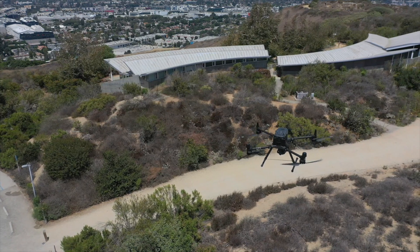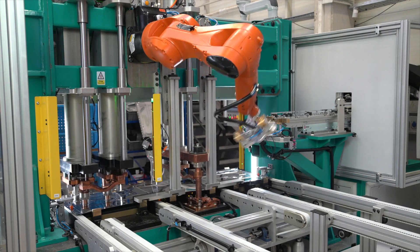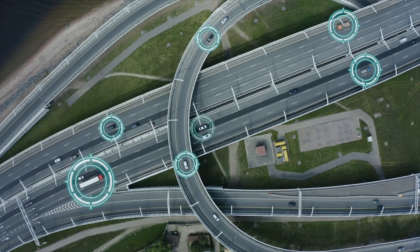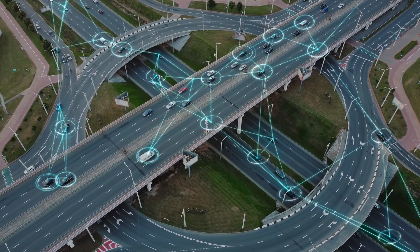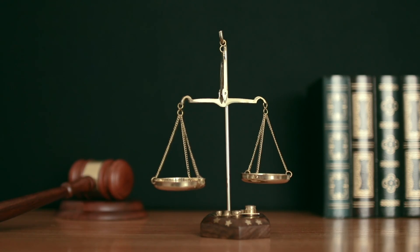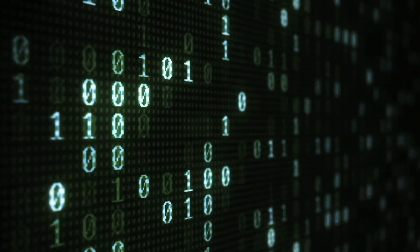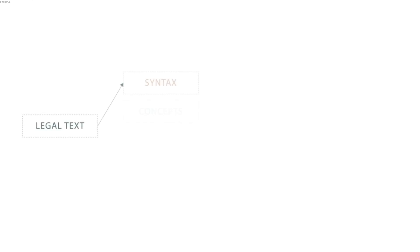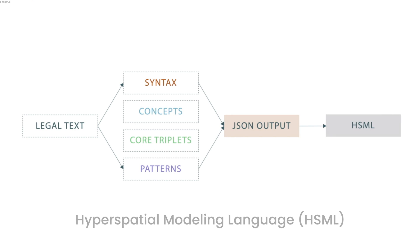When autonomous machines like drones, vehicles, and robots operate in the world, their behavior needs to be governed by the laws of the land. However, there's been no way to translate legal text into machine-readable code so that autonomous systems can operate under the most up-to-date legislation — until now. Hyperspatial Modeling Language, or HSML, is a spatial web standard developed at the IEEE.